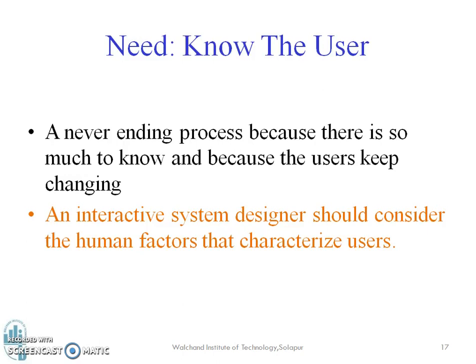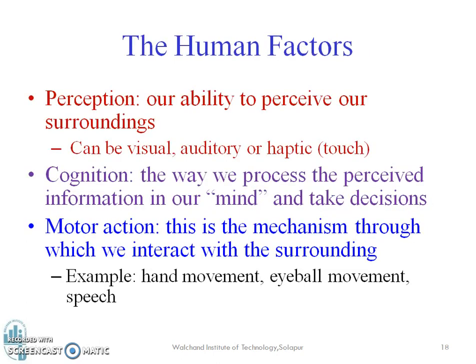An interactive system designer should consider the user and also the human factors that characterize the user. The human factors to consider while designing an interactive system are basically perception — our ability to perceive our surroundings — then cognition, and motor action.